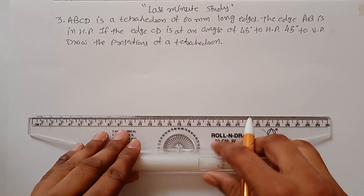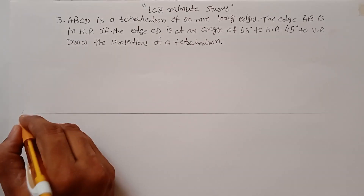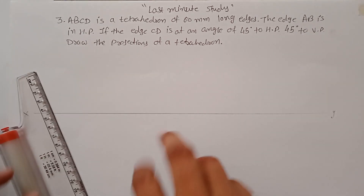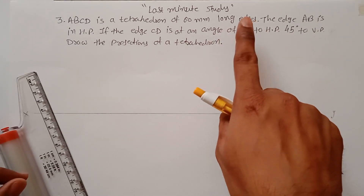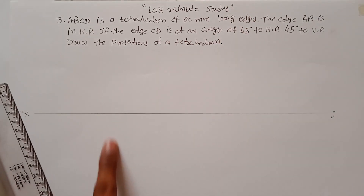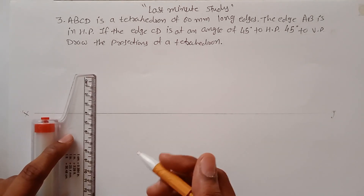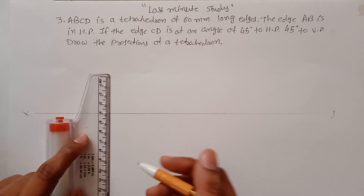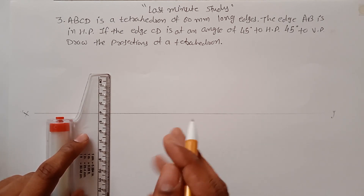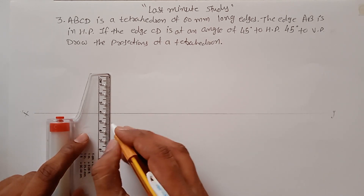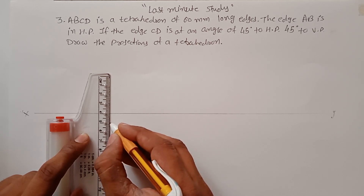First, draw a line XY. Since it is resting with its long edge, in projection of solids you have to draw the resting element here. Since it's resting with its edge and it's a tetrahedron, all the triangles on the solid are equilateral triangles. So draw an equilateral triangle of 60mm.